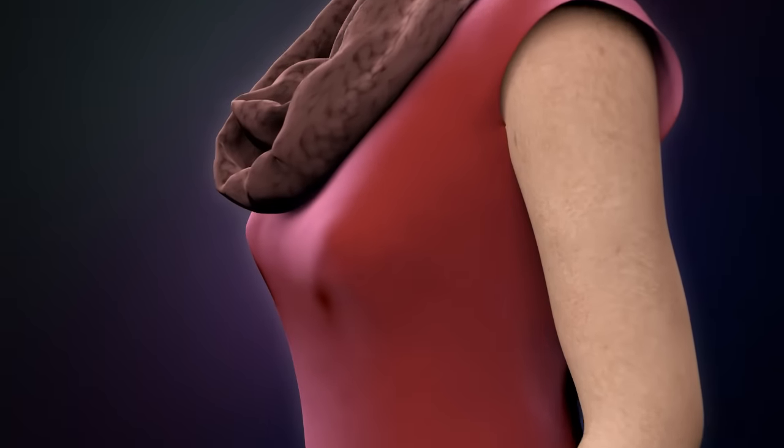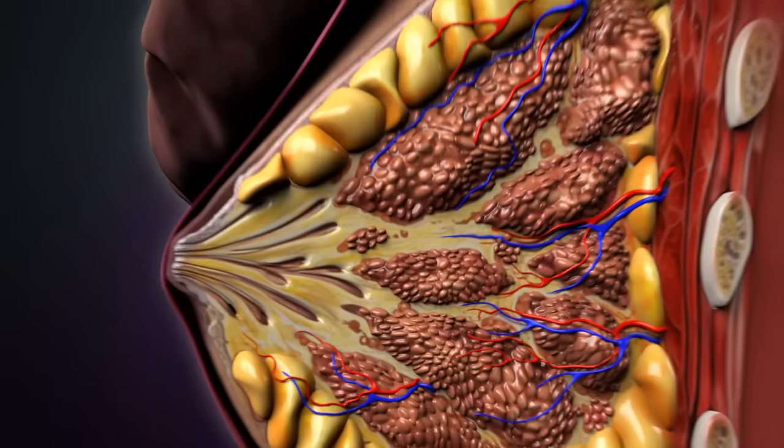Every year, one million women all over the world suffer from breast cancer. A healthy breast consists of different cell types.